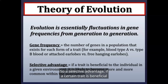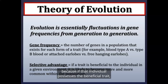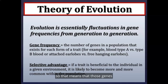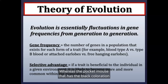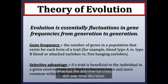A selective advantage means that if a certain trait is beneficial to the individual in a given environment, it's more likely to become more common. The rock pocket mice with genes coding for sandy brown fur in the desert are more likely to survive and reproduce, passing those genes to future generations. The dark-colored mice are more likely to be caught by predators, so they're less likely to pass along their genetic material. Over time, beneficial traits increase in the population while detrimental traits decrease.